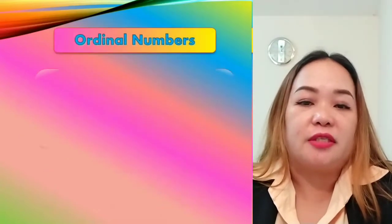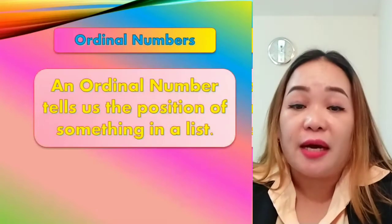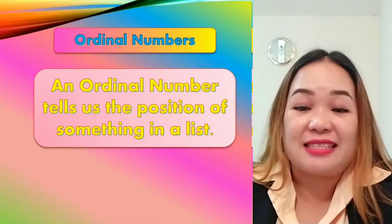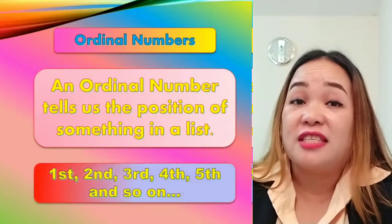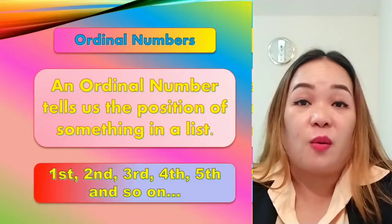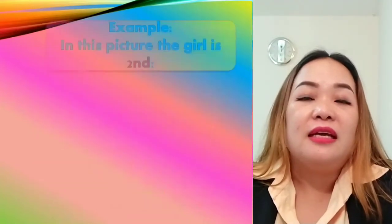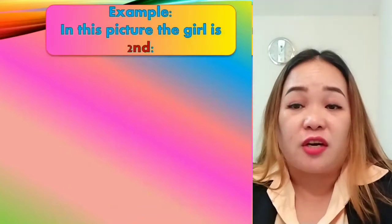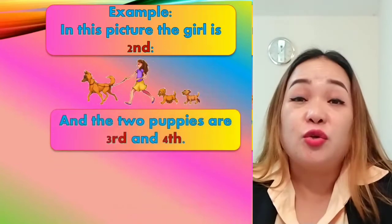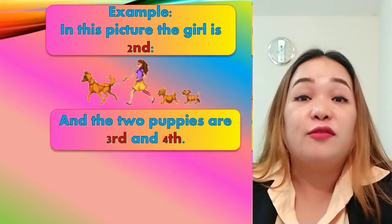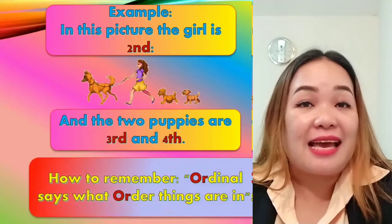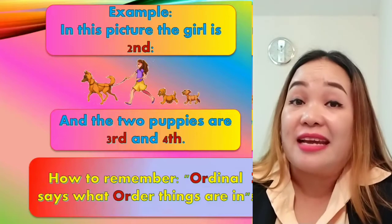Ordinal numbers. An ordinal number tells us the position of something in a list, like first, second, third, fourth, fifth, and so on. For example, in this picture, the girl is second, and the two puppies are third and fourth. How to remember this? Ordinal says what order things are in.